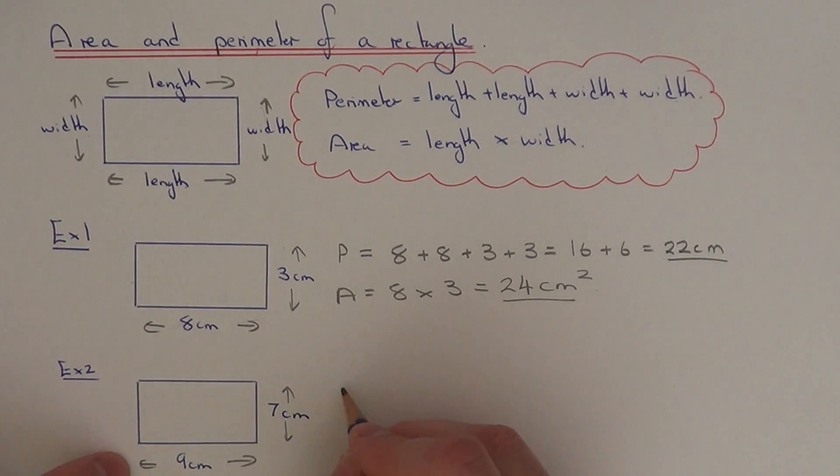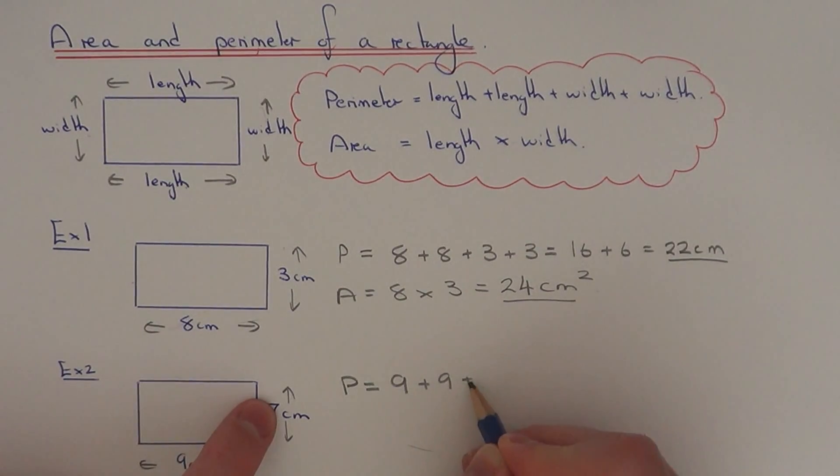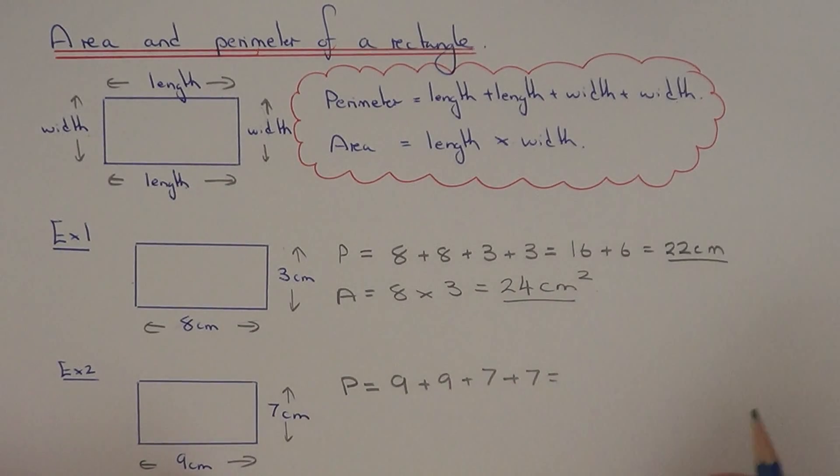To work out the perimeter, you just need to add up the four sides. So we do the length, add the length, plus the width, plus the width. So nine add nine is eighteen, seven add seven is fourteen, eighteen add fourteen is thirty-two centimetres.